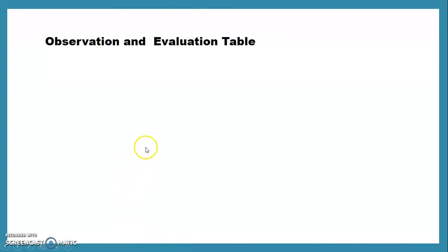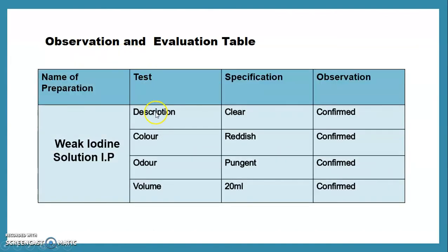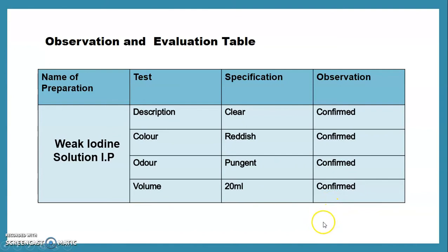The observation and evaluation table for Weak Iodine Solution IP includes: description — clear (confirmed); color — reddish (confirmed); odor — pungent (confirmed); volume — 20 ml (confirmed). All tests are confirmed and the evaluation table should be documented because the experiment title requires us to prepare, evaluate, and submit the preparation.